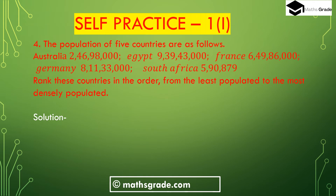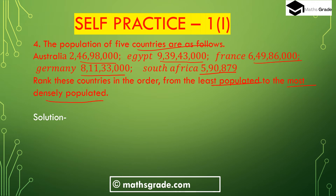Question number 4: The population of 5 countries are as follows — Australia: 2,46,98,000; Egypt: 9,39,43,000; France: 6,49,86,000; Germany: 8,11,33,000; South Africa: 5,90,879. Rank these countries from the least populated to the most densely populated, that is from the smallest to the greatest number.